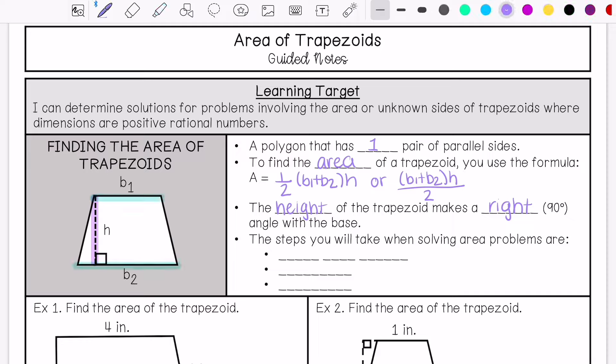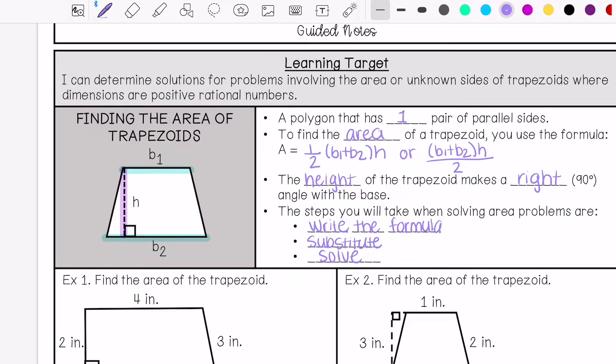So my steps to solve an area problem is I need to write the formula, I need to substitute what I know, and then I'm going to solve it.